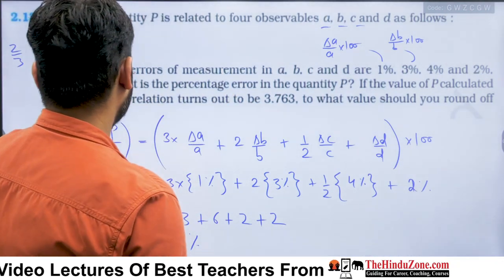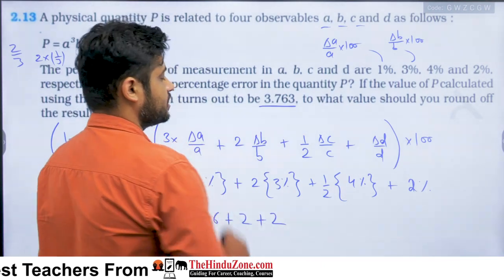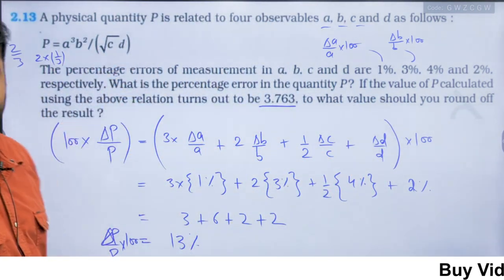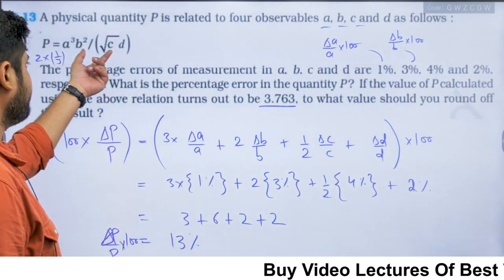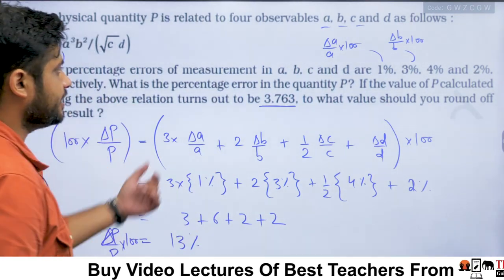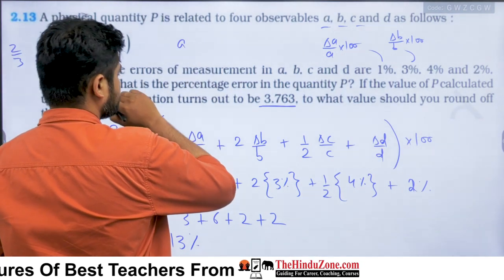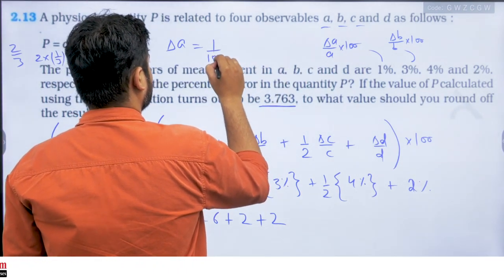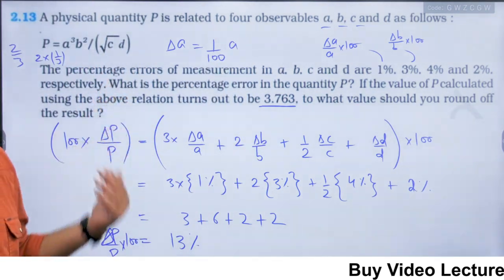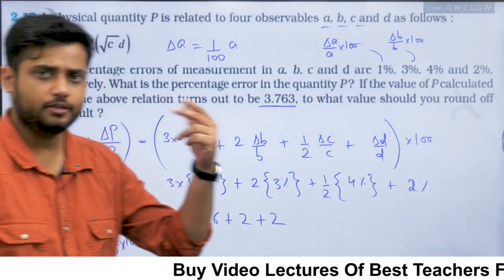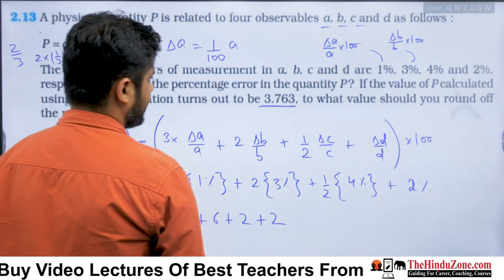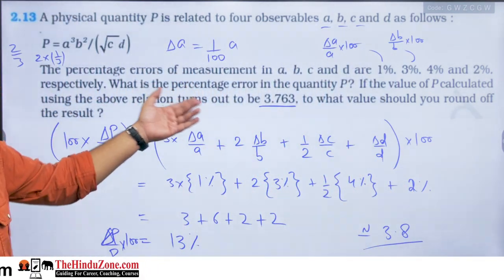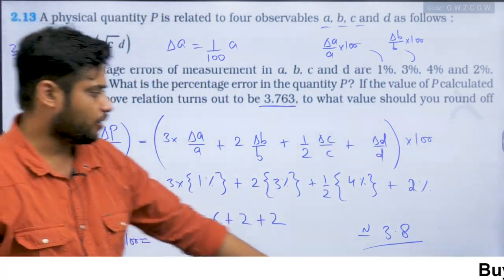The next part: using the above relation, the value of P calculated is 3.763, which has 4 digits. To what value should you round off the result? We don't know the exact values of A, B, C, D, but we know the percentage errors. Since there are about 2 decimal places estimated, we can approximate P to 3.8. In multiplication/division we cannot be exact without knowing A, B, C, D's values, but we can round it off to 3.8.